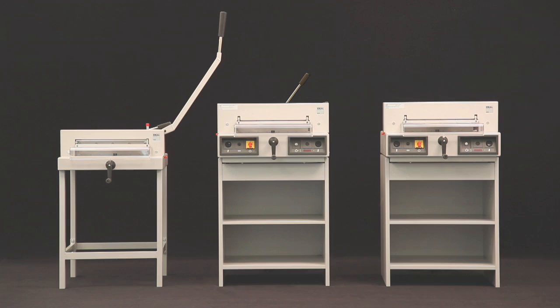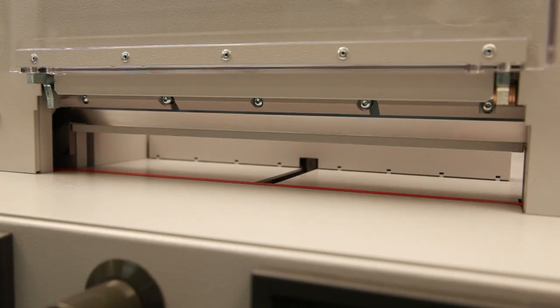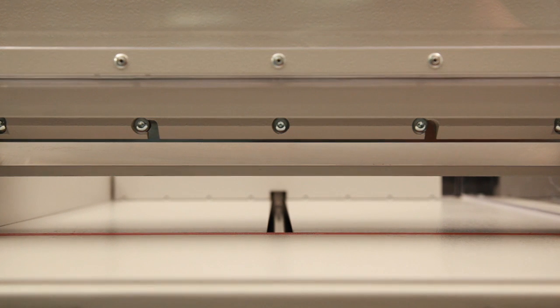Ideal presents the 4305, 4315, and 4350 office guillotines. These machines have a cutting length of 430 and a cutting width of 435 millimeters.